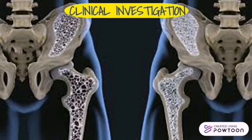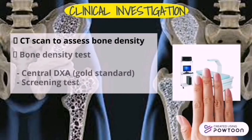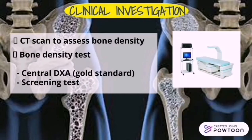Clinical investigation of osteoporosis: a CT scan is used to assess bone density. Next is the bone density test, which includes central DXA (dual-energy X-ray absorptiometry), gold standard, and screening tests.